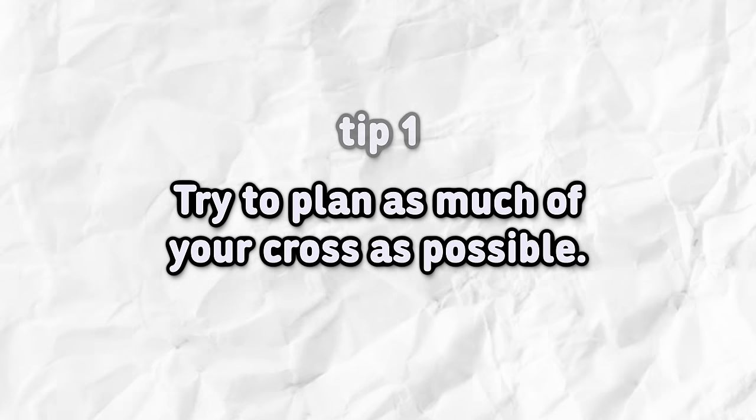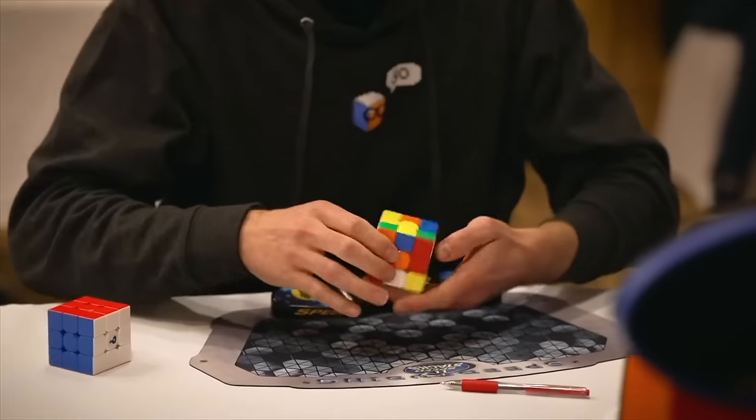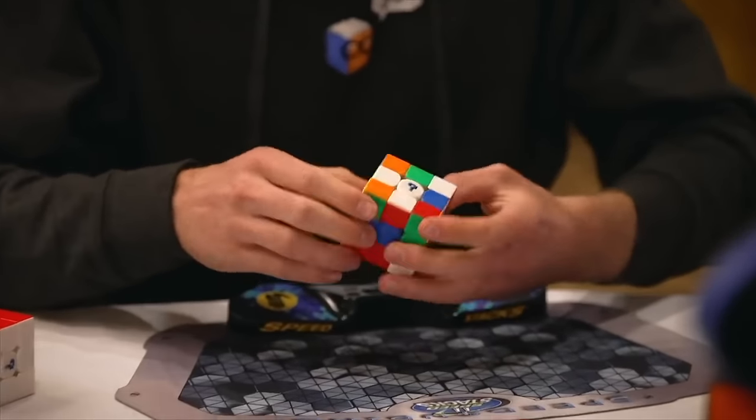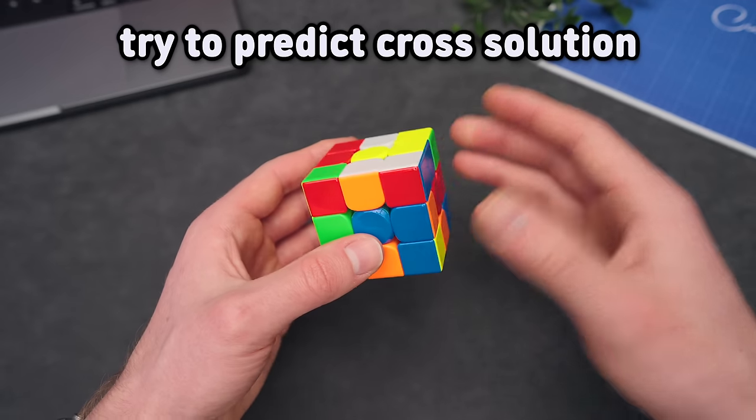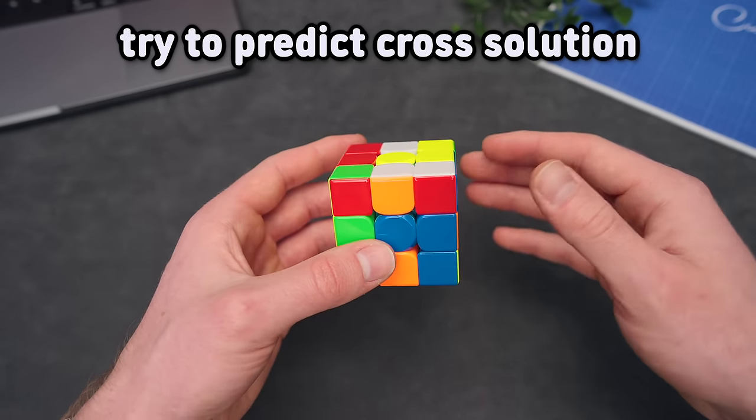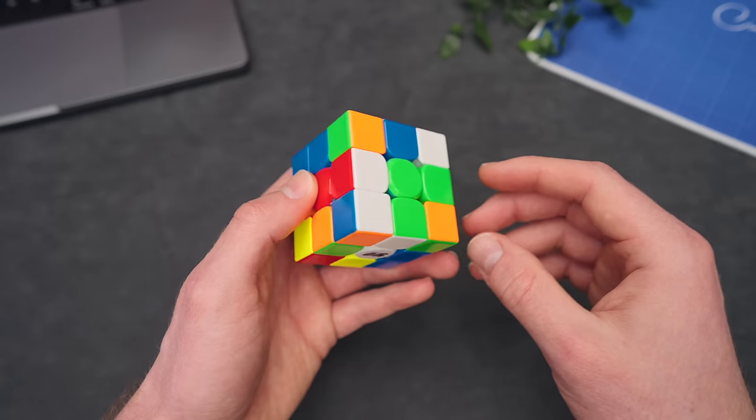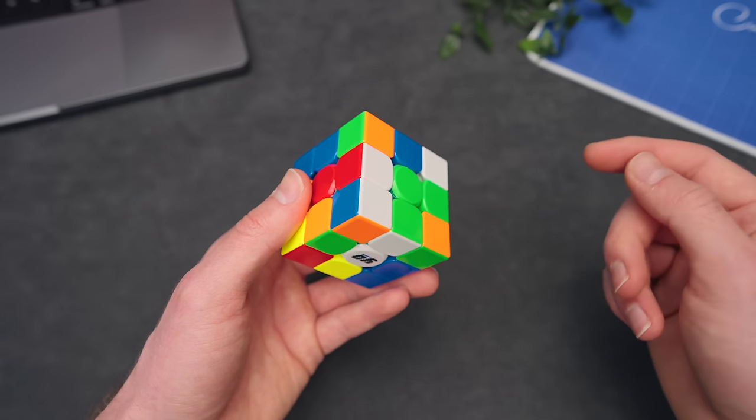Try to plan as much of your cross as possible. Even during competitions, you have 15 seconds of inspection time. So use those seconds really well. You're only solving four pieces. And the main goal here is to just know what you're going to do before you actually do it.